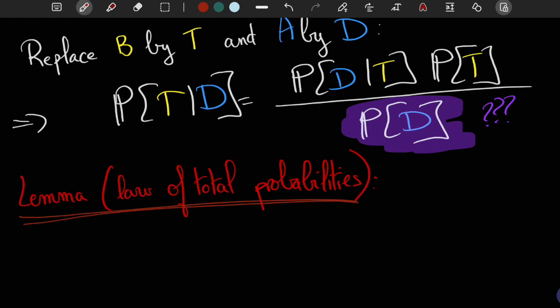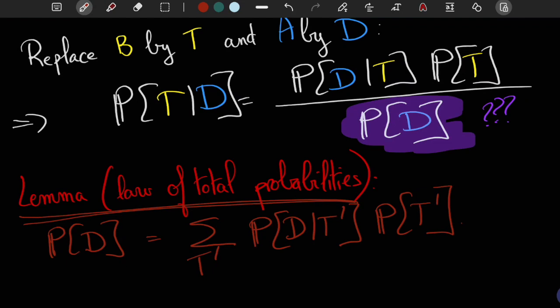which says that the probability of D is equal to the weighted sum of the different ways to compute it through different theories T prime. That is, the probability of D is equal to the sum over T prime of the probabilities of D given T prime times the probability of T prime. And in particular, since T is one such theory,